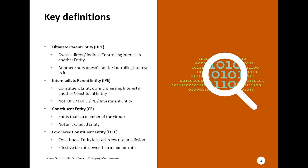The last definition is low tax constituent entity: this is a constituent entity located in a low tax jurisdiction or a stateless constituent entity. A stateless constituent entity covers certain types of flow-through entities and permanent establishments. A low tax jurisdiction is one which has net GloBE income — so the jurisdiction as a whole is not loss-making — and has an effective tax rate below the minimum rate of 15%. To be a low tax constituent entity, as well as being located in the low tax jurisdiction or being stateless, the constituent entity itself must have GloBE income and be subject to an effective tax rate lower than the minimum rate of 15%.